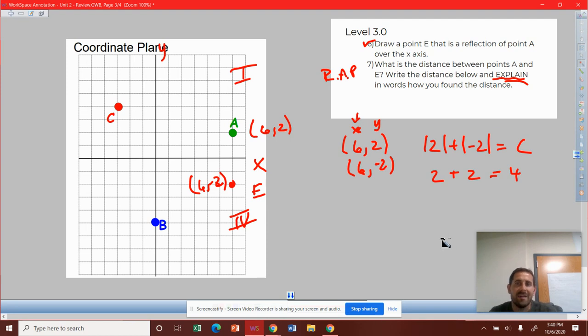How would I go about explaining that? So what is the distance between point A and point E? So let's do a RAP response. Restate the question: The distance between A and E is. So I've just restated the question. Check.